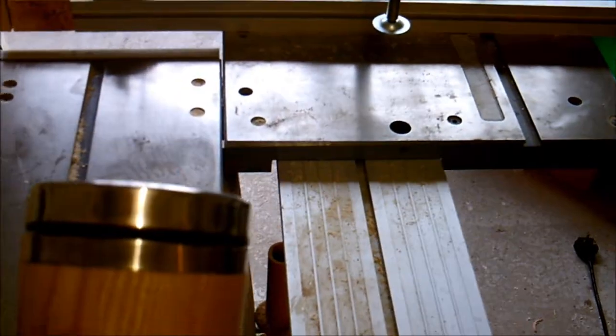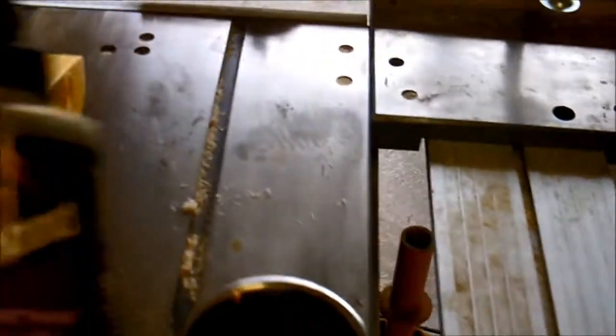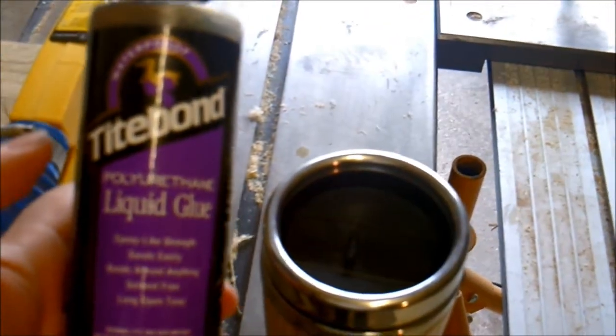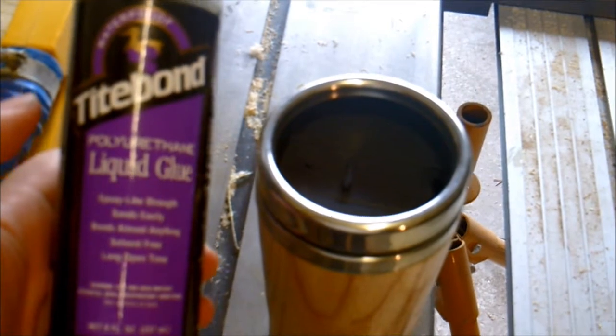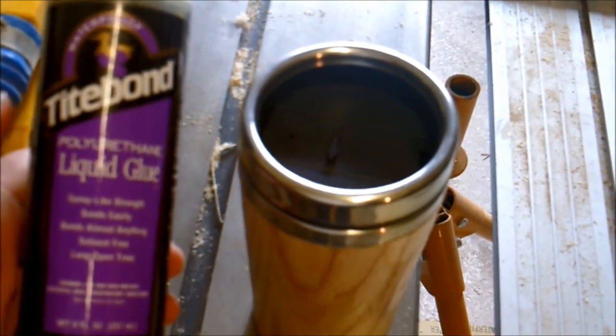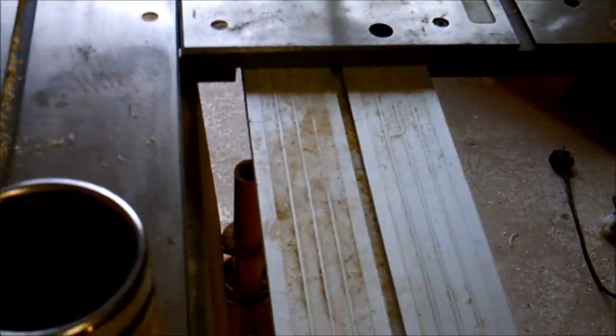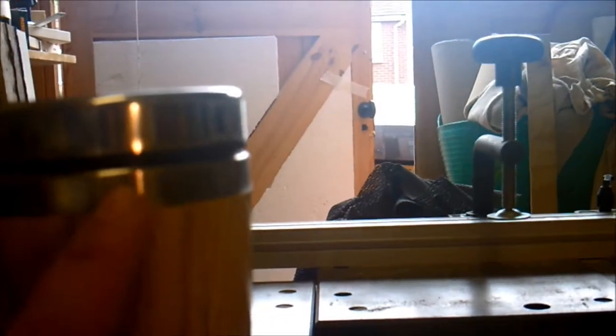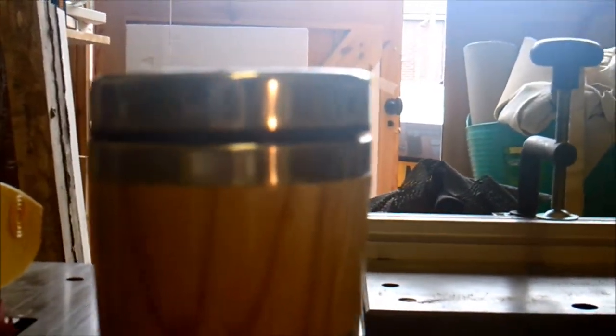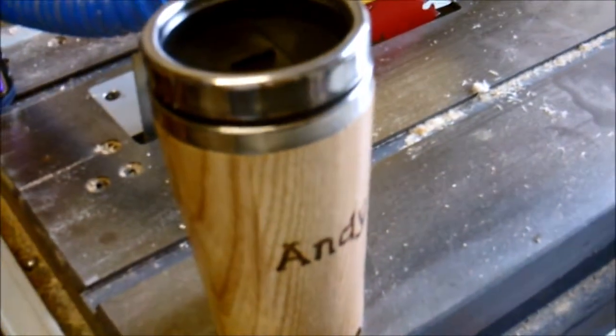I've glued the liner in using Titebond liquid polyurethane glue which foams up on contact with moisture so I'm hoping that will not only glue it in place but also have foamed up and filled any gaps on the inside to help with insulation. I've put a bead of silicone sealant around this edge here before gluing it together because the Titebond expands. This was a push fit of the liner but I held it in place with a couple of clamps just to stop if there was too much expansion from it pushing the liner out.